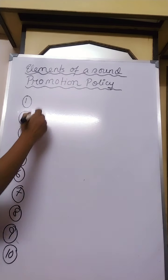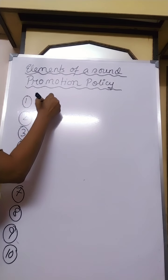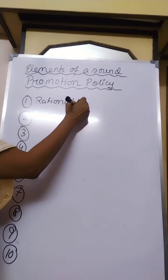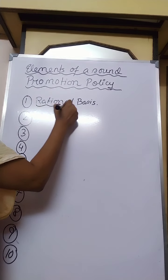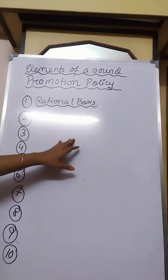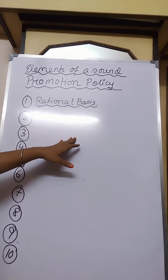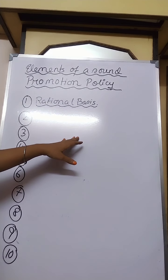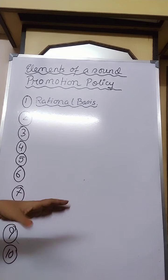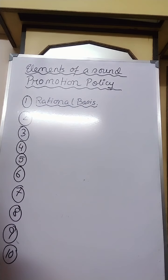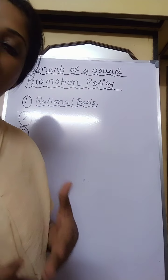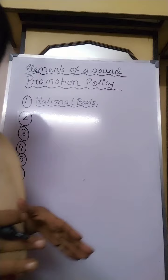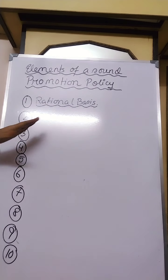The first element is rational basis. The policy should point out clearly what would be the basis of promotion — merit or seniority or both. It is rational that the policy should consider both bases: seniority and merit. Both bases are rational.